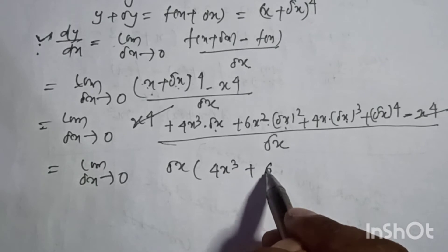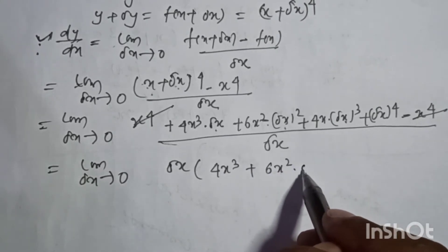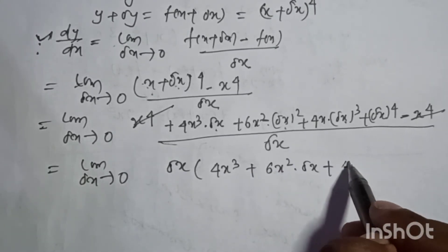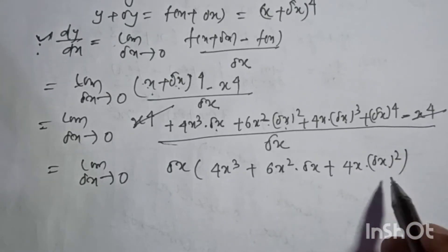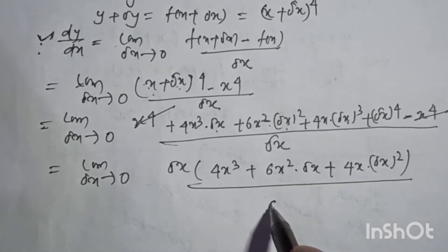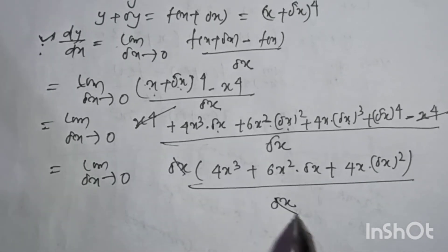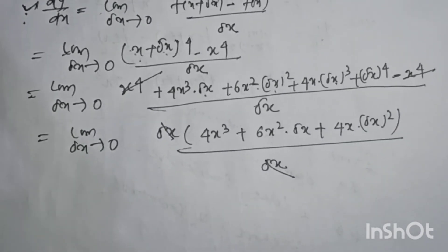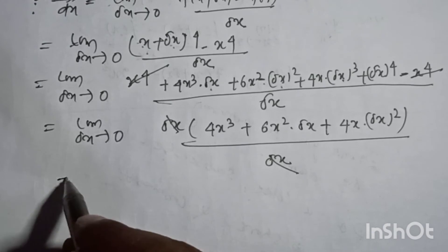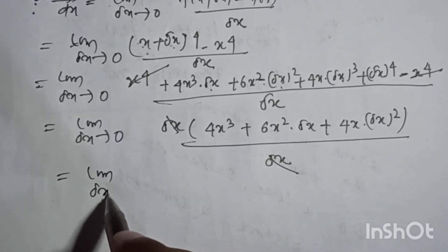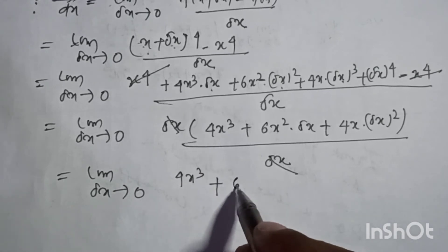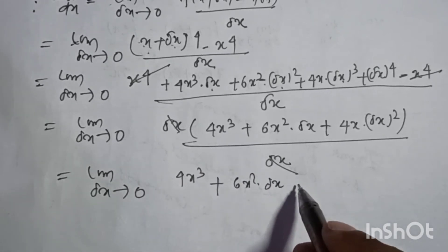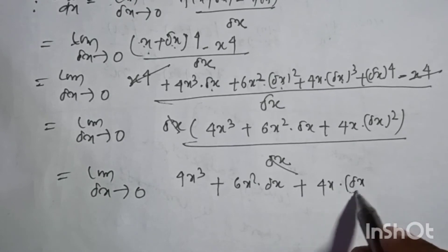Taking del x common from the numerator and canceling with denominator del x. Limit del x tends to 0: 4 x cube plus 6 x square into del x plus 4 x into del x square plus del x cube.